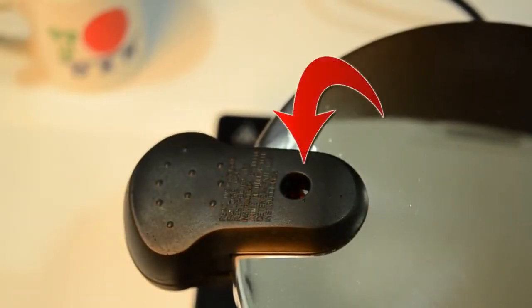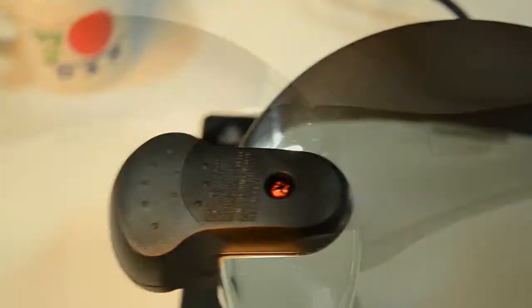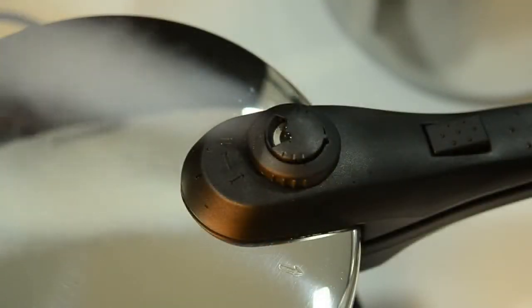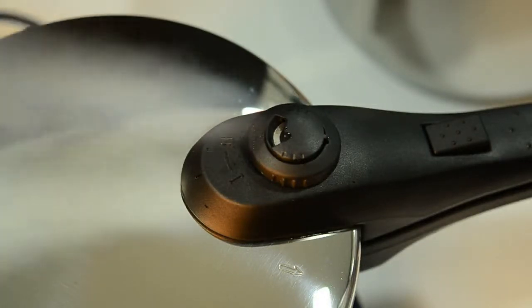After switching on the stove at high heat, it will take about 8 to 10 minutes for the red indicator light to rise. Once the red indicator light rises and steam is released from the valve, the cooking process begins. You can then reduce the heat and let the food cook.